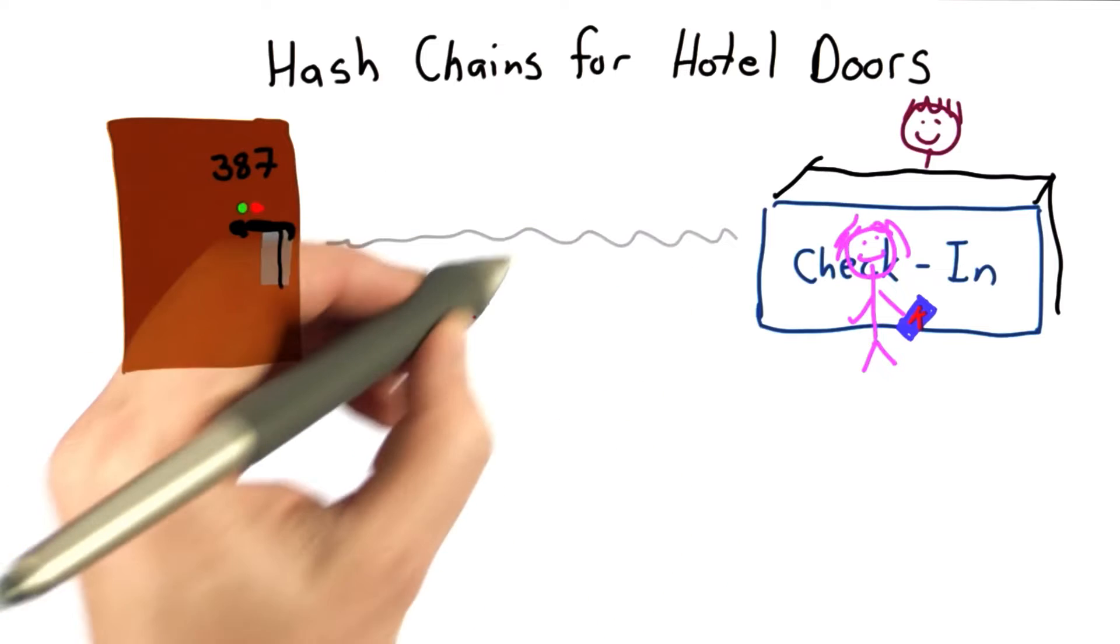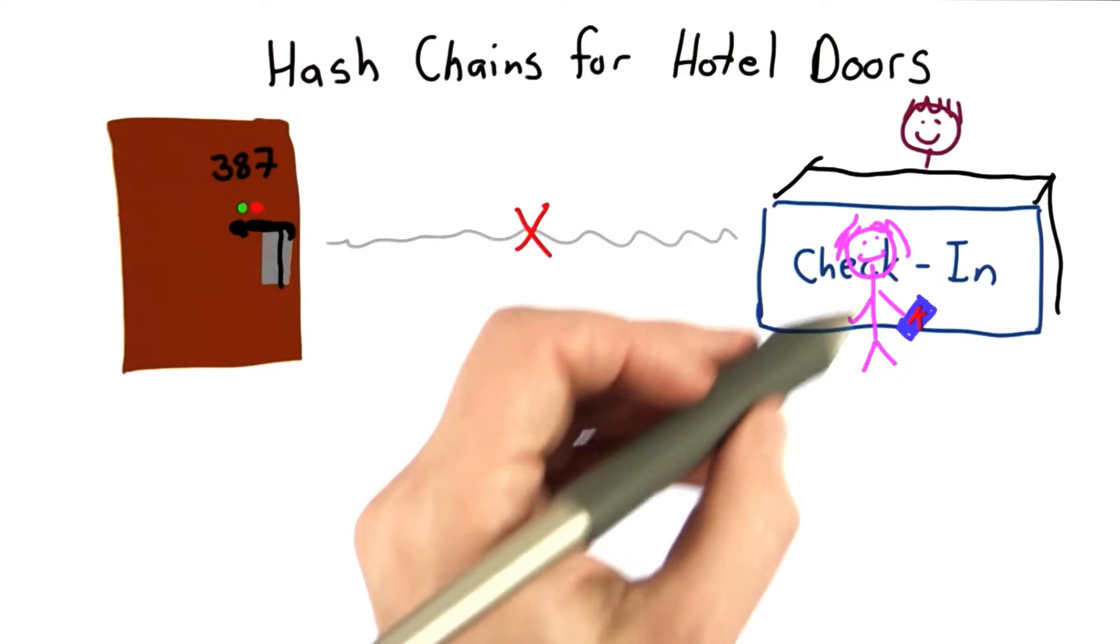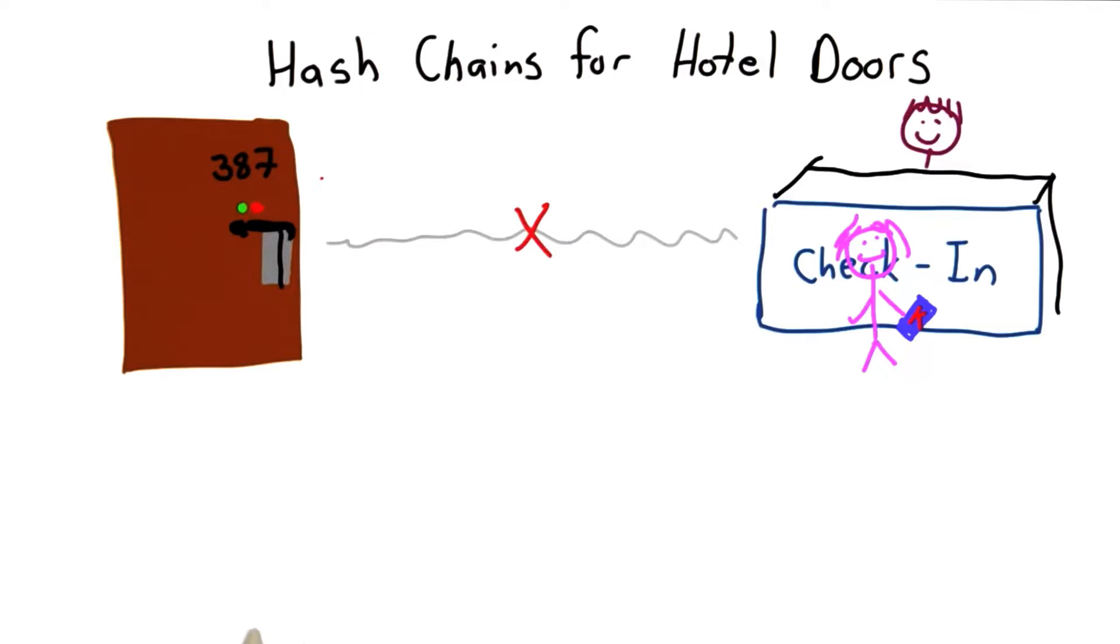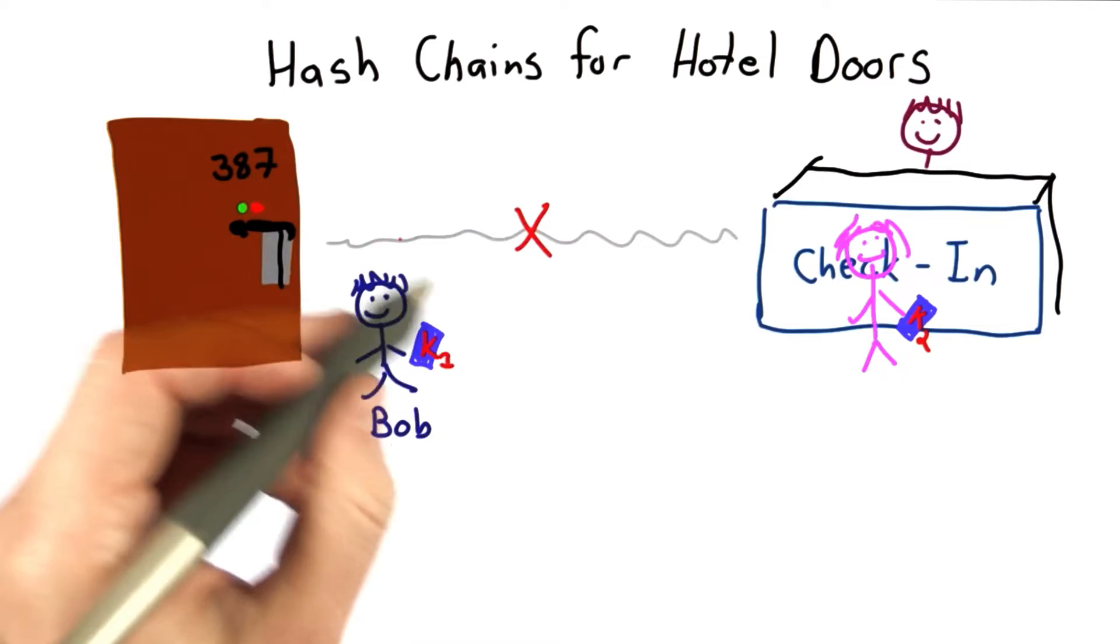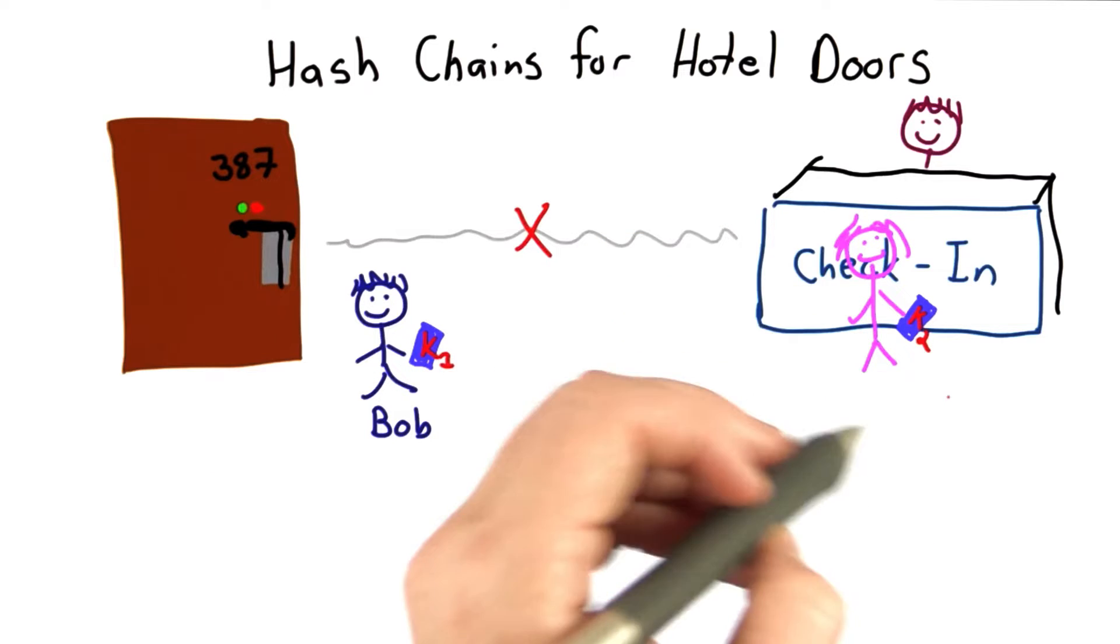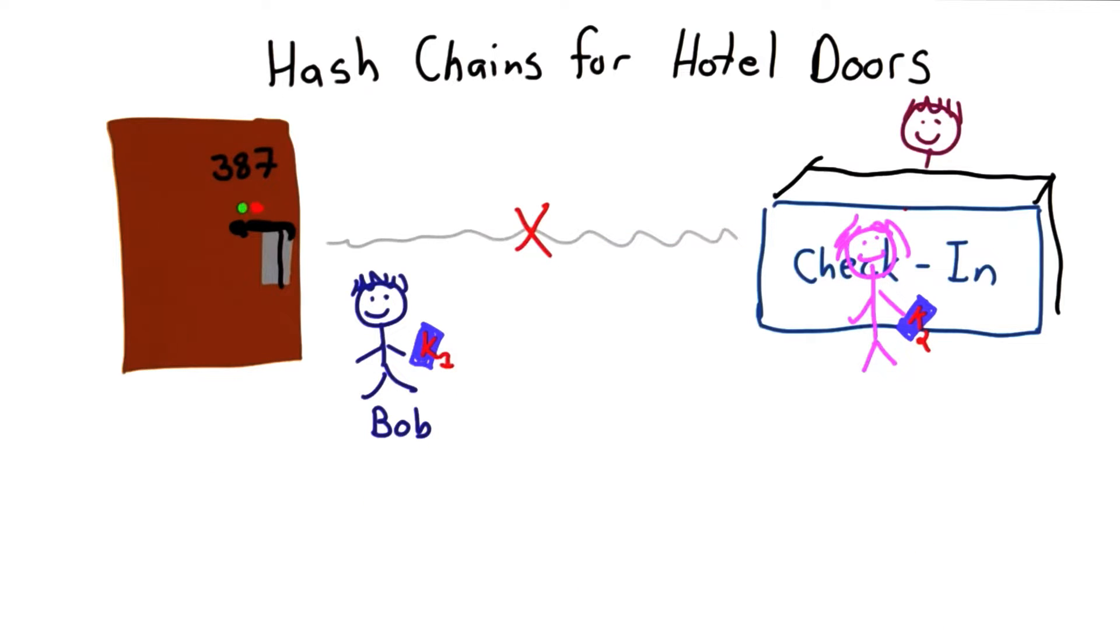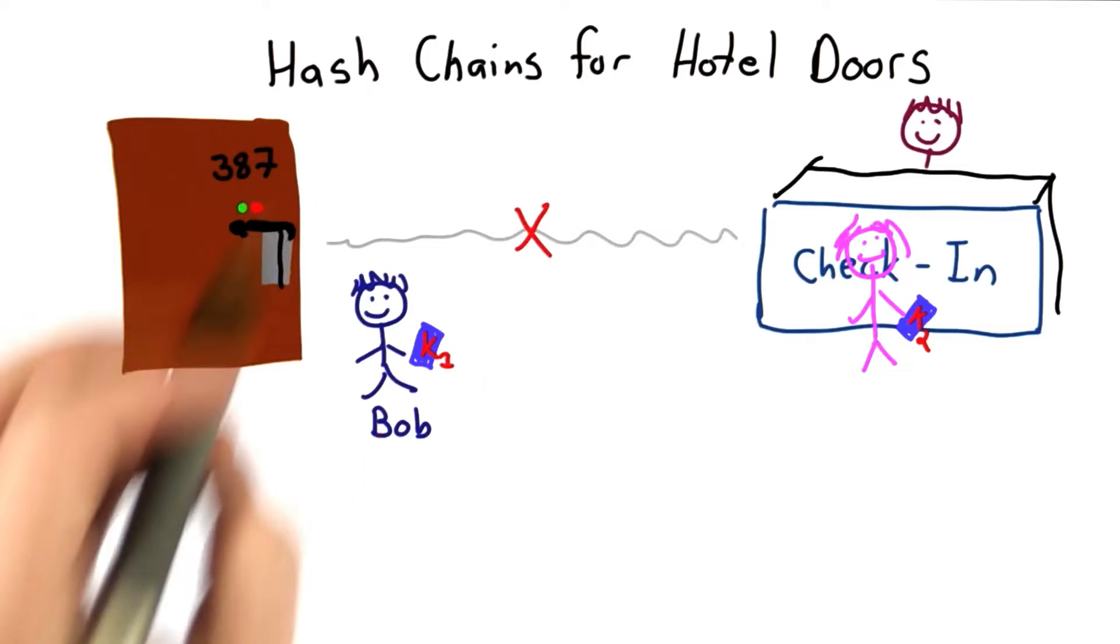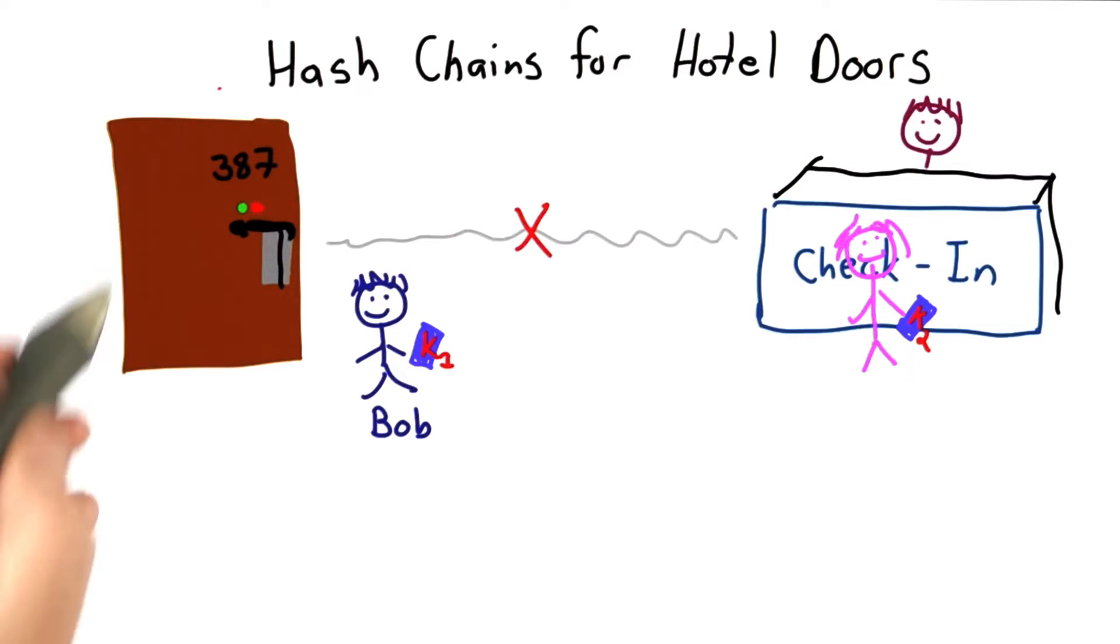There's no connection between the check-in desk and the door, and we want to know that Alice will be able to enter the room. Whoever stayed in the room previously, let's say that was Bob, shouldn't be able to enter the room anymore. At the point after Alice checks in and enters the room, Bob should no longer be able to enter it. And we'd like to have all this happen without needing any coordination between the desk and the door.